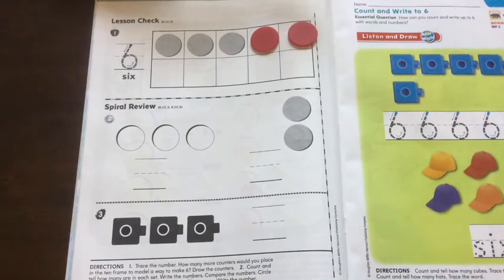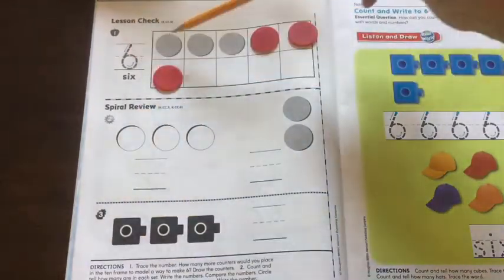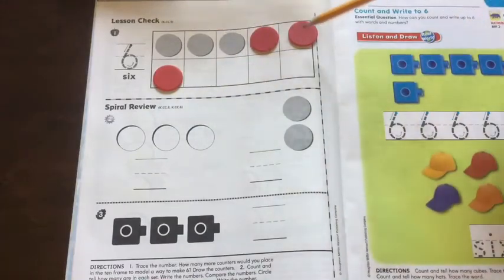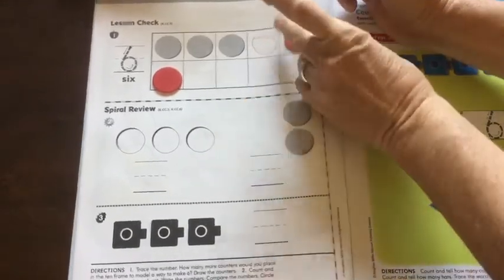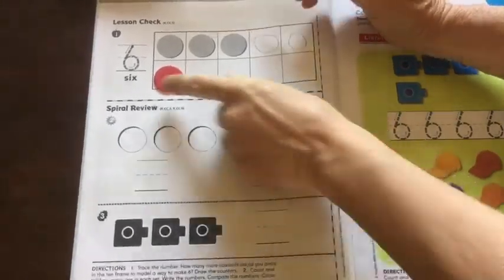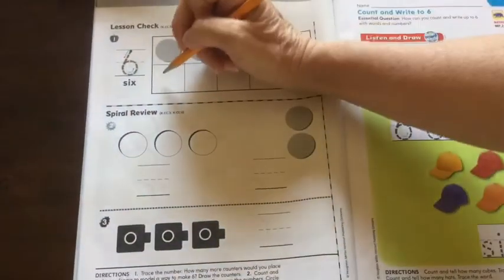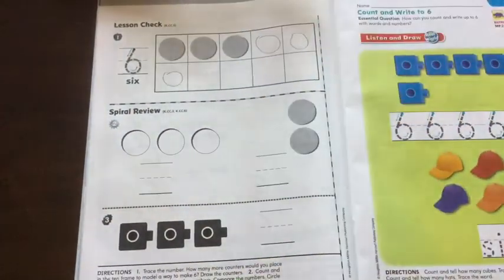Let's put another one on. 1, 2, 3, 4, 5, 6. We have 6. Okay, so you can move those and you can either do an X or circle them. There we go. There's 6.